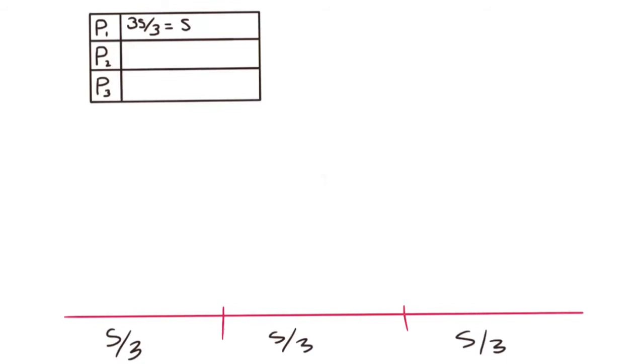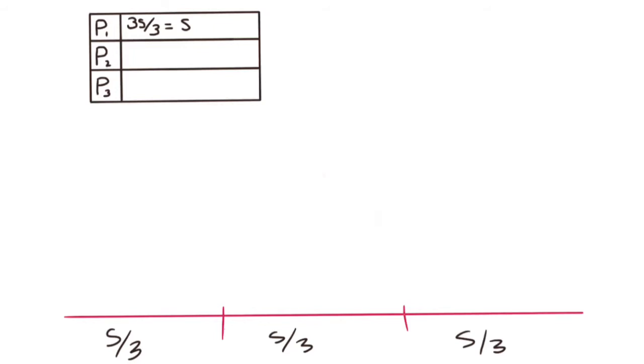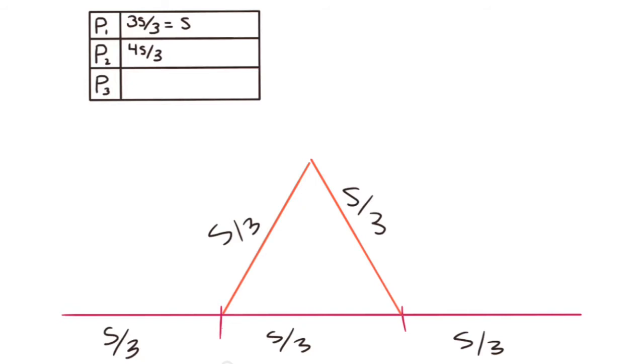When we divide the line into three equal parts, each section is s over 3, giving us a total perimeter of s. Moving on to the next part, we can also label both sides of the triangle as s over 3. We know this because the triangle is equilateral, meaning all sides are the same length. When we add up the sides, we are left with a perimeter of 4s over 3.